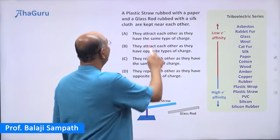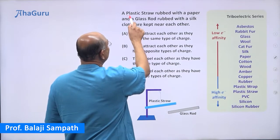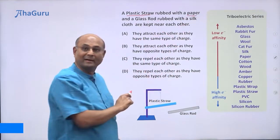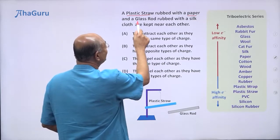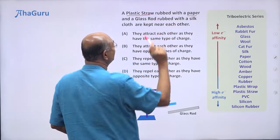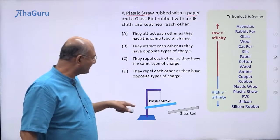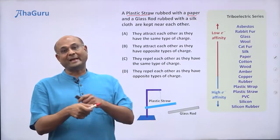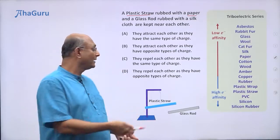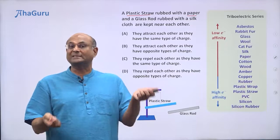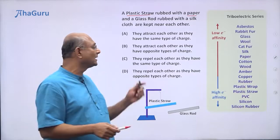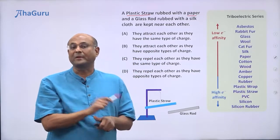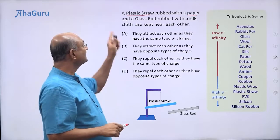In this question, we have a plastic straw that is rubbed with paper, and a glass rod that is rubbed with a silk cloth. They are kept near each other, and we want to know what is going to happen — will they attract, will they repel, and is it because they get the same kind of charge or different types of charge?